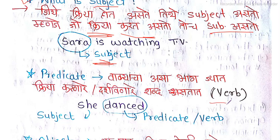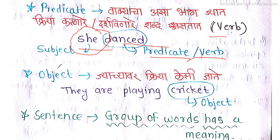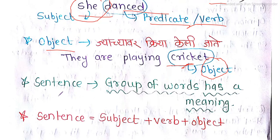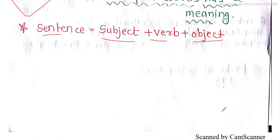A sentence has a subject and a predicate. The subject and predicate together form the sentence. For example, 'she dances.' A sentence has a meaning: sentence = subject + verb + object.